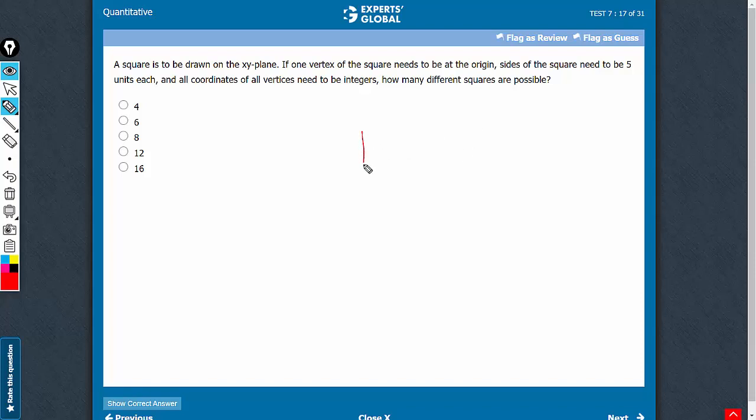Let's draw the x-y plane to begin with. This is our x-y plane. Now, one vertex needs to be at the origin, and each side needs to be 5. So what are the possibilities?